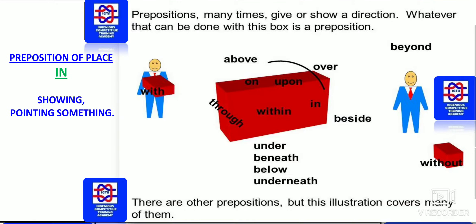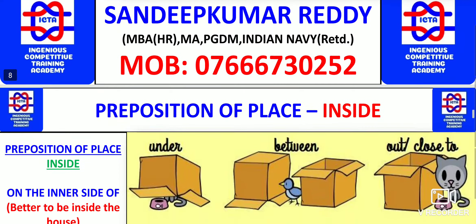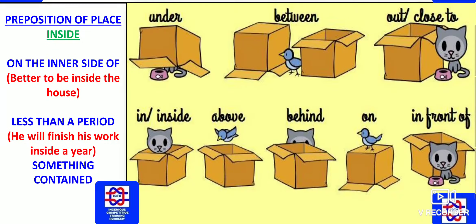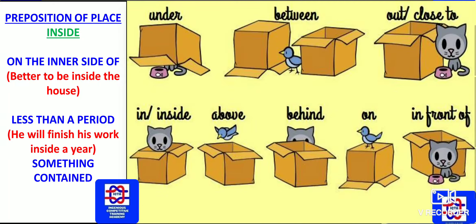Next we have preposition of place using 'in.' Showing or pointing to something at a place: he is in the house — showing or pointing something which is inside. For preposition of place with 'inside': the cat is inside the box. On the inner side of — it is better to be inside the house. Stay safe. Less than a time period: he will finish his work inside a year — so here 'inside' indicates less than a time period of one year.